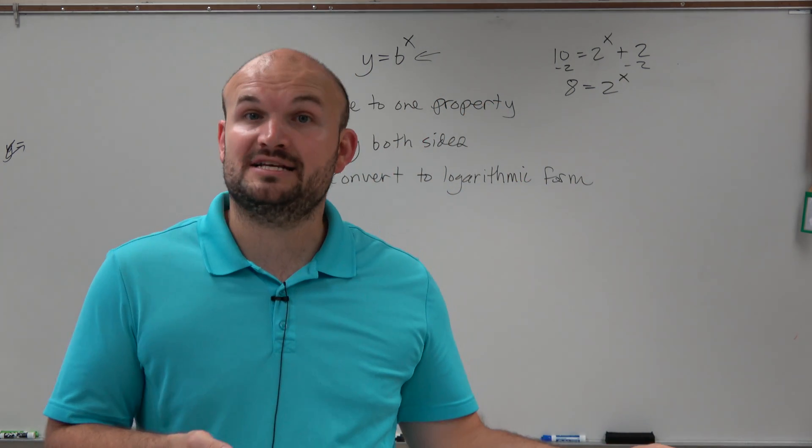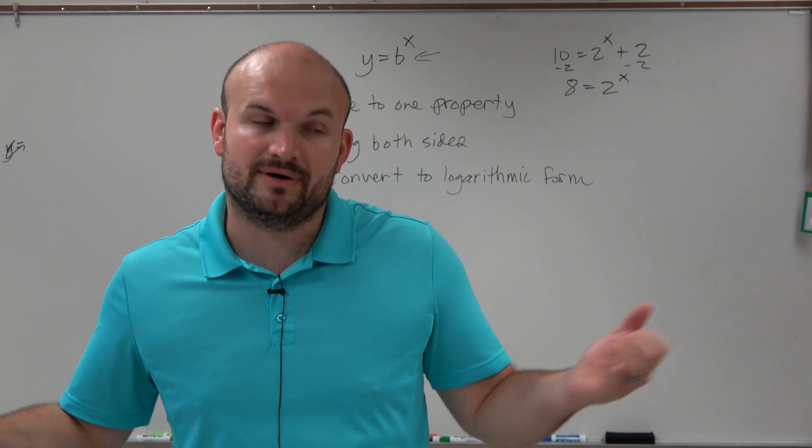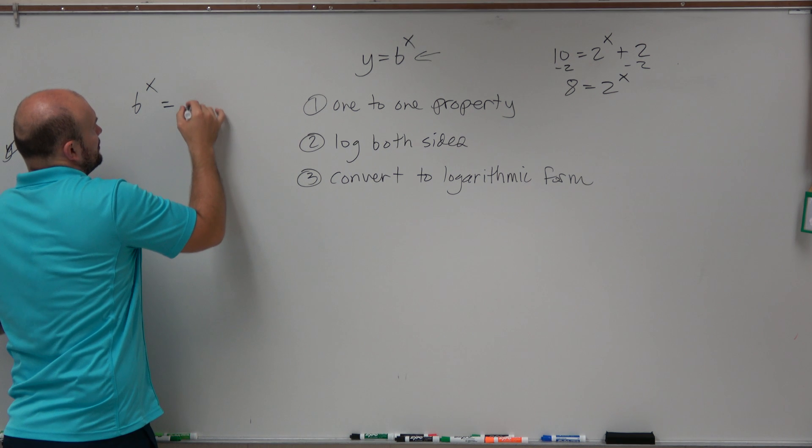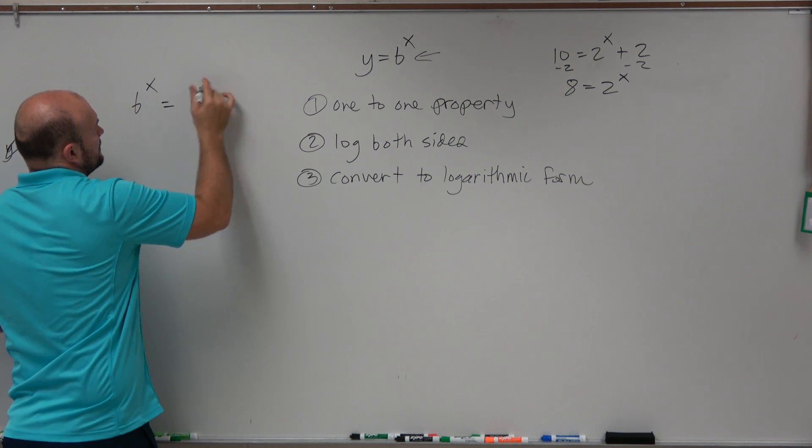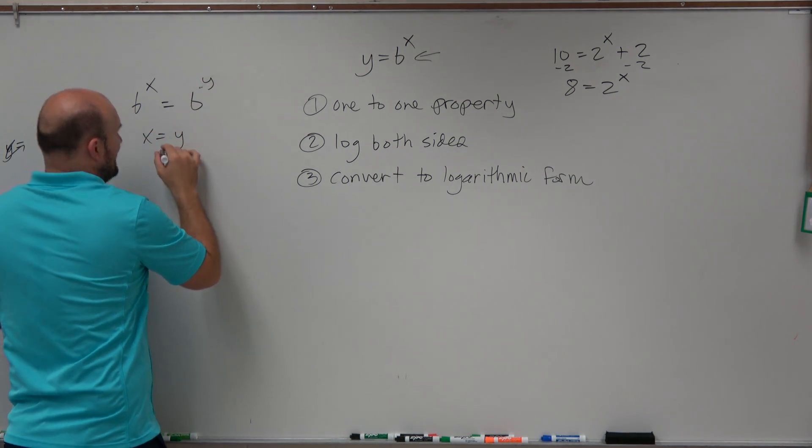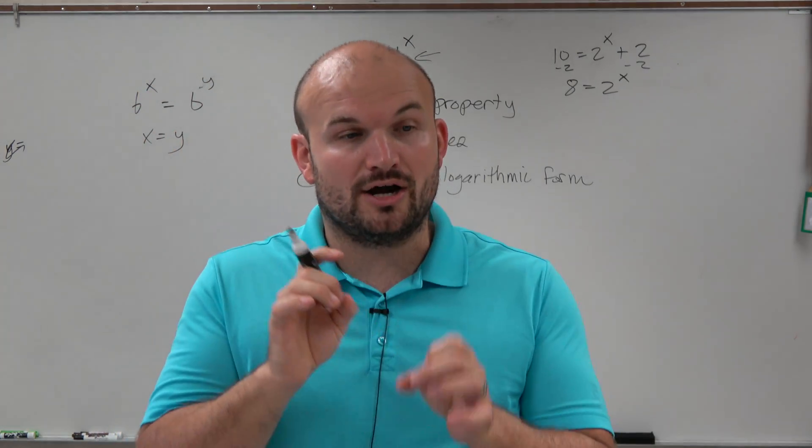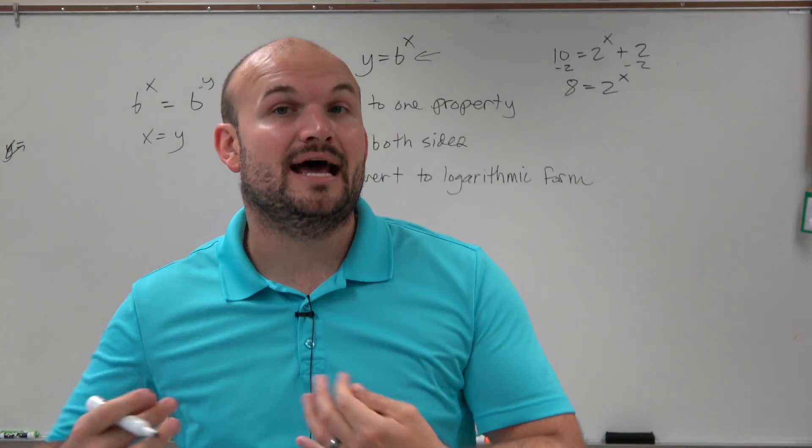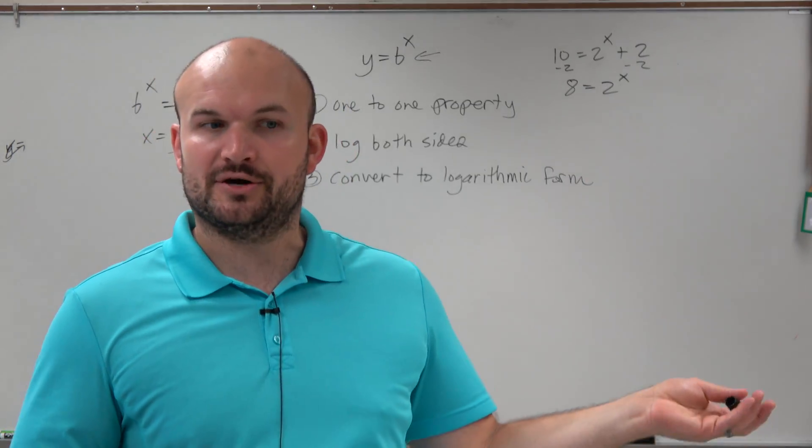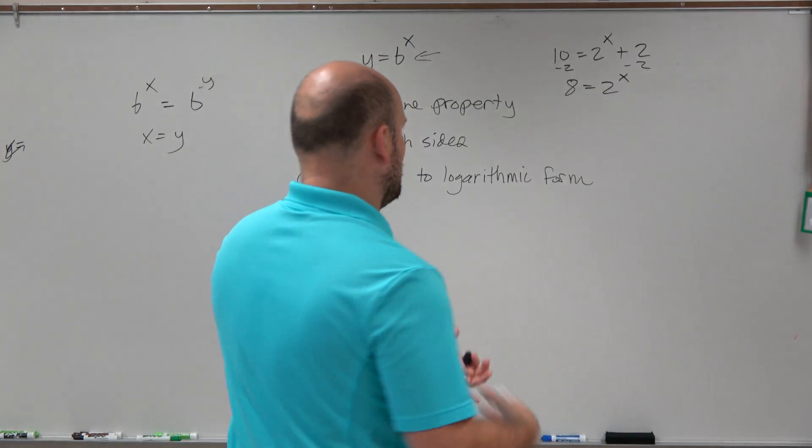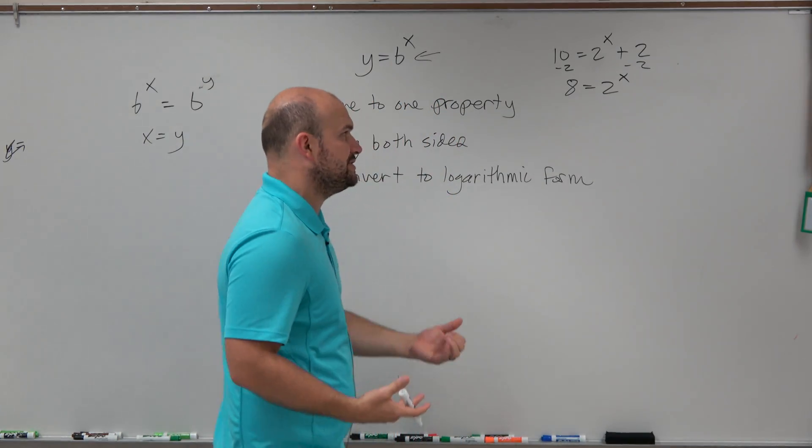Now, that brings me to my next point as far as applying the one-to-one property. Basically, the one-to-one property states, if I have b to the x equal to b to the y, then x is going to equal y. So what we want to do is be able to write our equations with the same basis. Now, some equations, this is very easy to do. Some equations, this is a little bit more difficult to do. I have a very basic problem on purpose, just to show you what exactly you need to do.